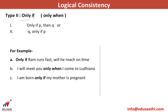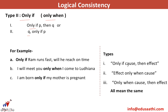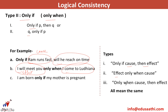Now let's look at the second connective: 'only if' or 'only when.' Pay utmost attention because this is where the confusion starts. The type of question is 'only if P then Q' or 'Q only if P.' For example: only if Ram runs fast will he reach on time; I will meet you only when I come to Ludhiana; I am born only if my mother is pregnant. The types covered are: 'only if cause then effect,' 'effect only when cause,' and 'only when cause then effect.' All mean the same — you just have to identify what is the cause and what is the effect.